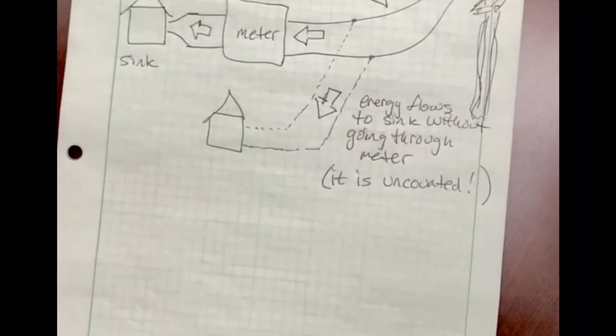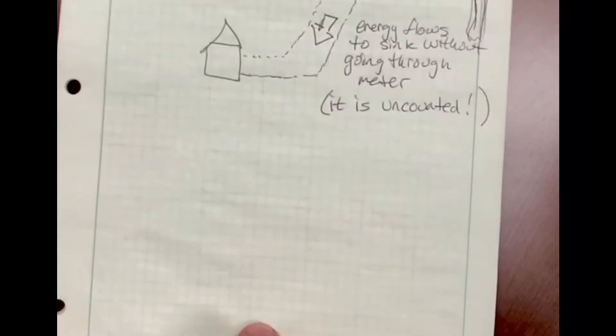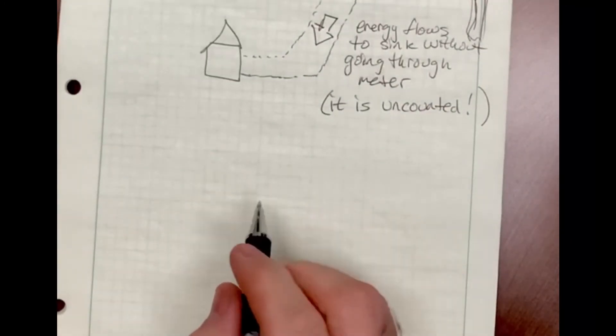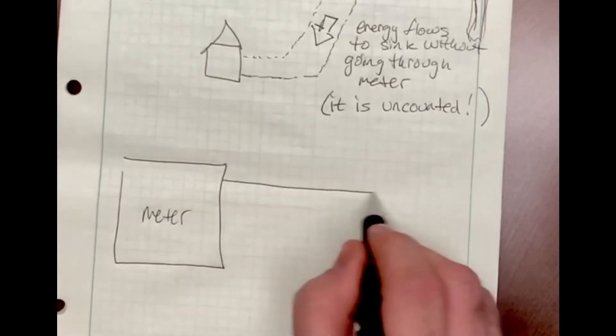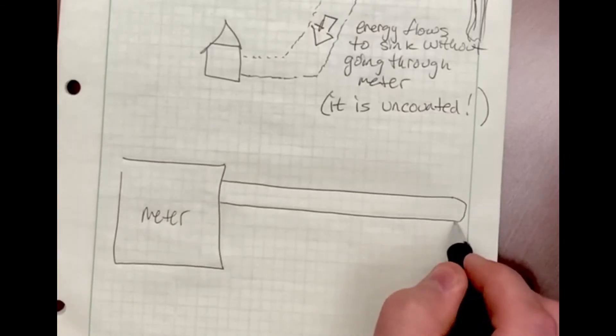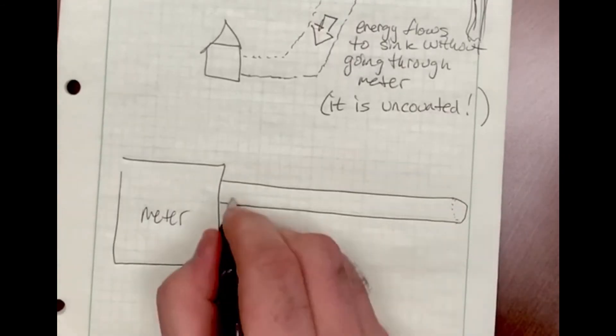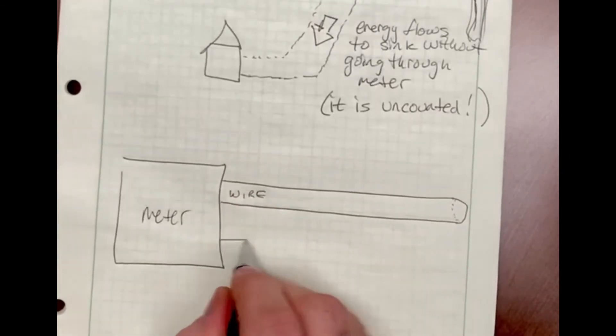Now energy is not only flowing through the meter to the intended sink, but I can also have energy flows into this secondary sink that is not being measured. It's not being counted because it doesn't go through the meter, and therefore the utility company does not know that I've consumed it. This goes on a lot in poor countries—they make illegal connections, and it's dangerous of course.